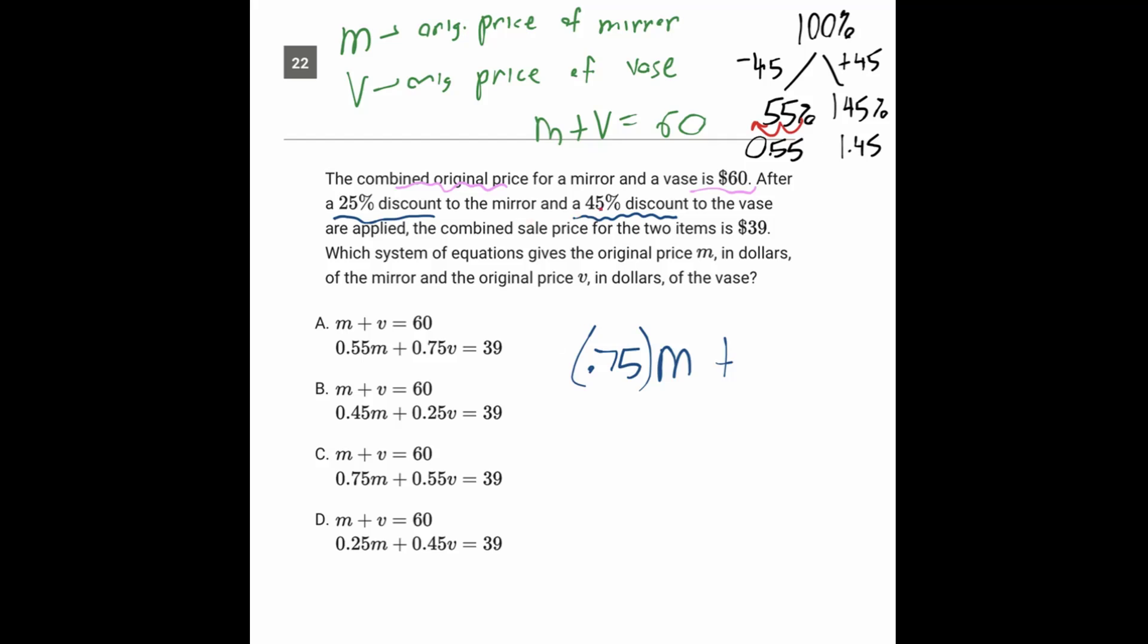So if we're discounting it at 45%, that means we're multiplying it by 0.55. And the discounted price, the combined sale price for these, is 39.